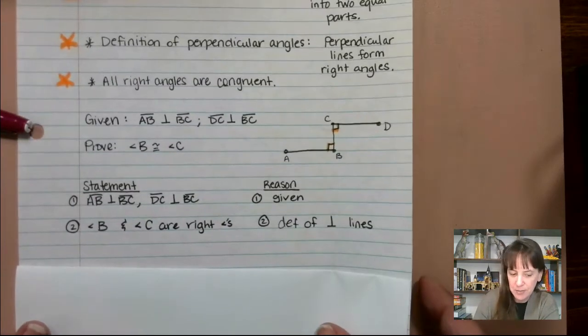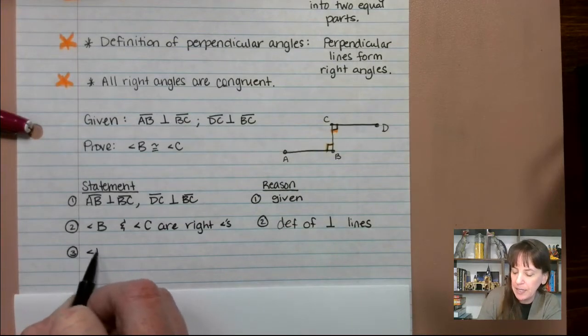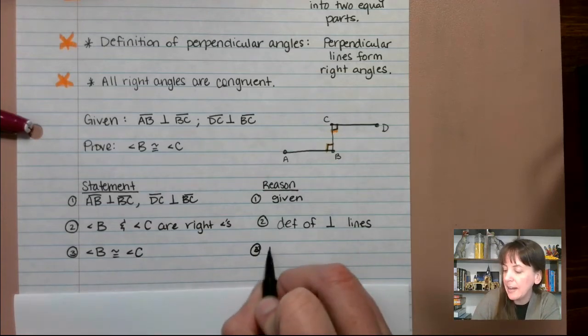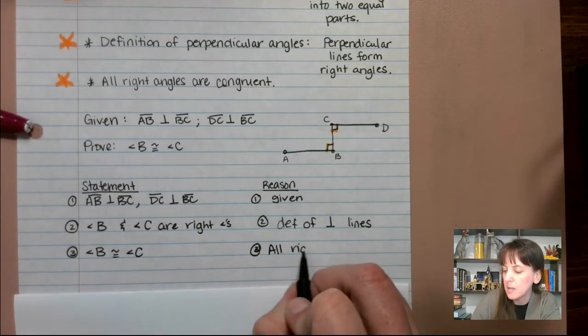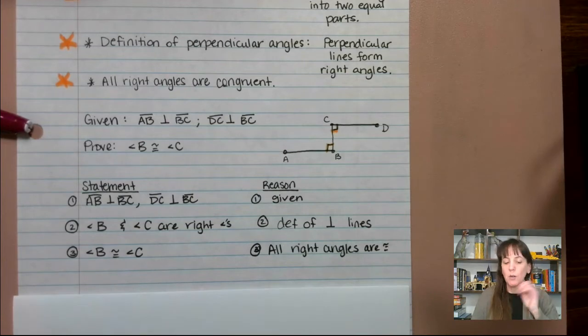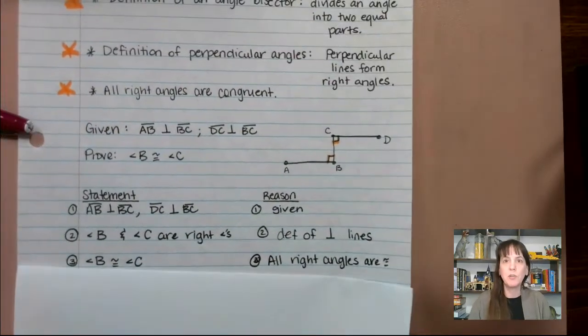So now that we know that those guys are right angles, what we can do is say angle B is therefore congruent to angle C because all right angles are congruent. All right angles are congruent. So therefore, we now know that angle B and angle C are congruent. So let's use that, but we're going to do another one using angle bisectors.